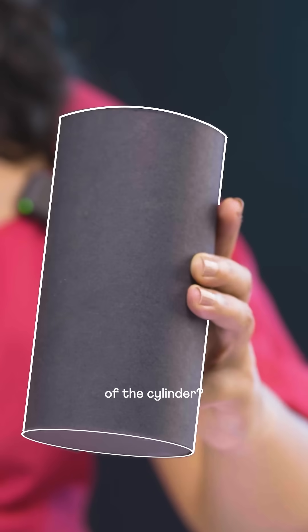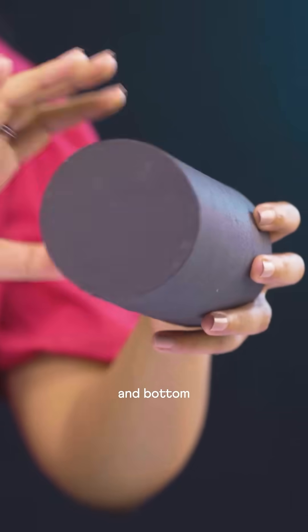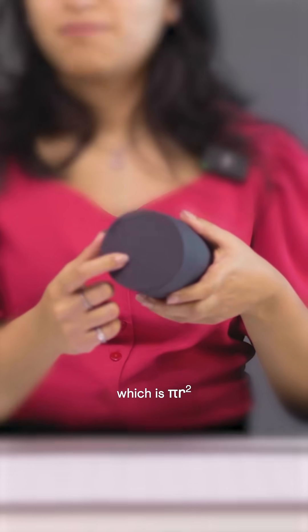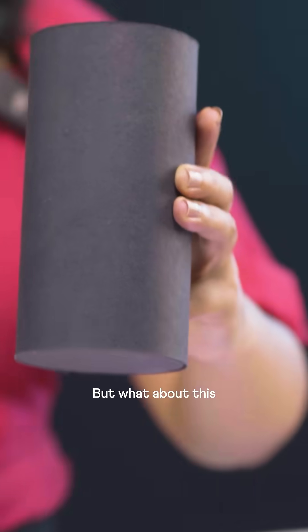Can you find the surface area of this cylinder? The areas of its top and bottom are circles, which is pi r squared. But what about this curved surface?